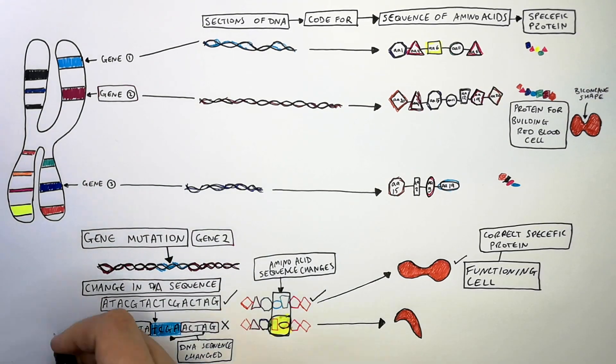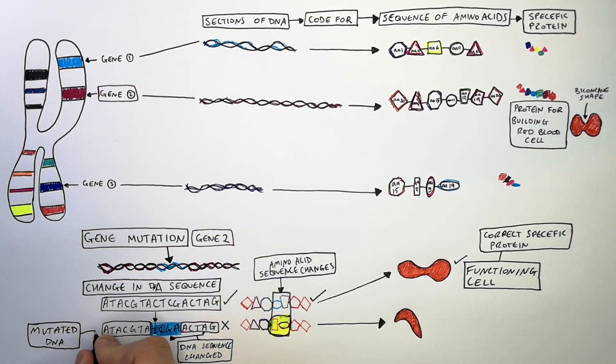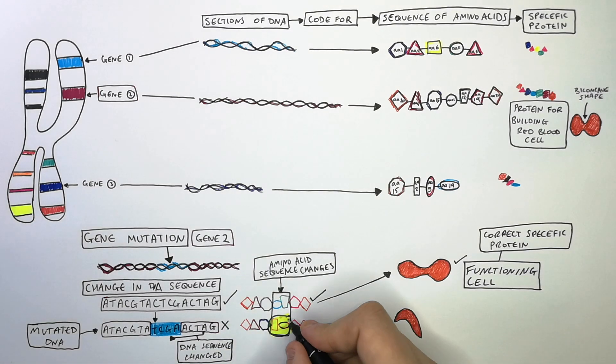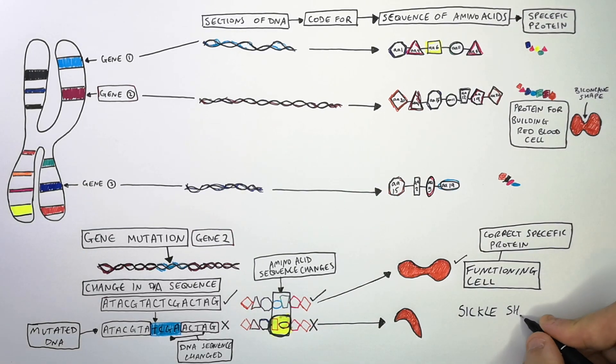So the mutated DNA causes a DNA sequence to change, which causes the amino acid sequence to change, which leads to, in this case, a sickle-shaped, poorly functioning red blood cell.